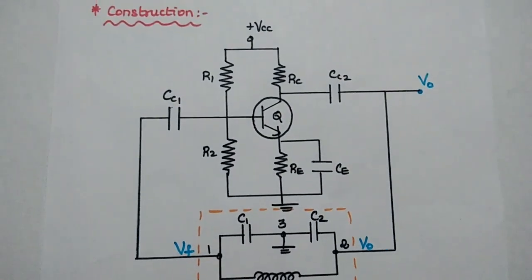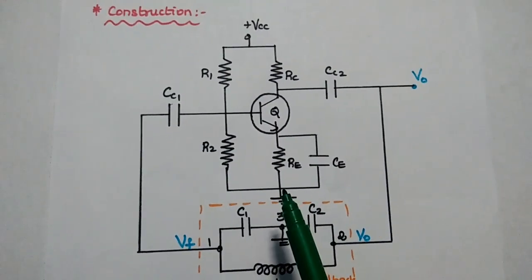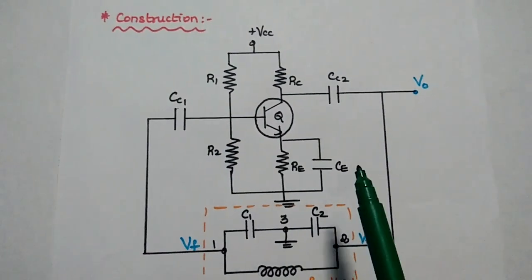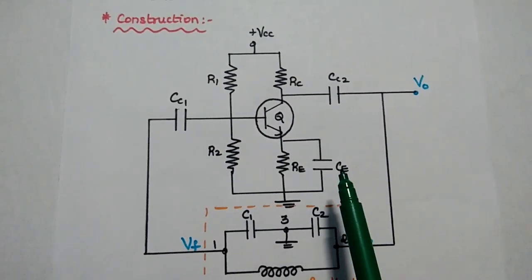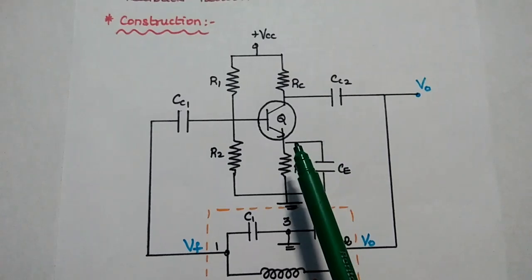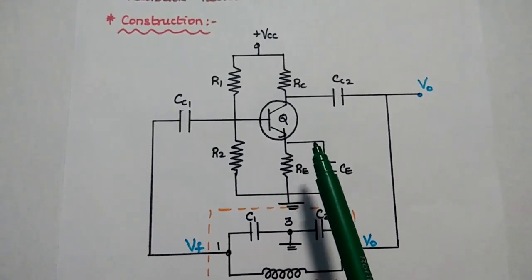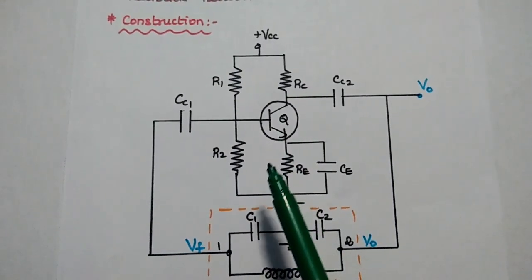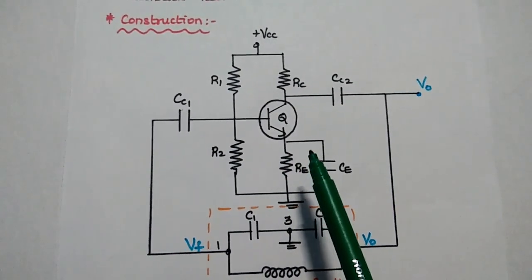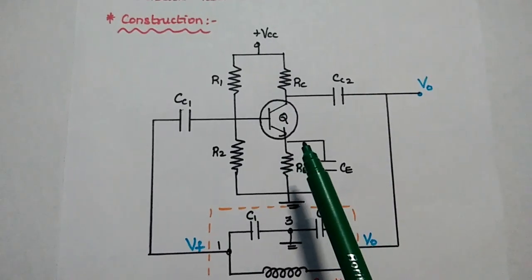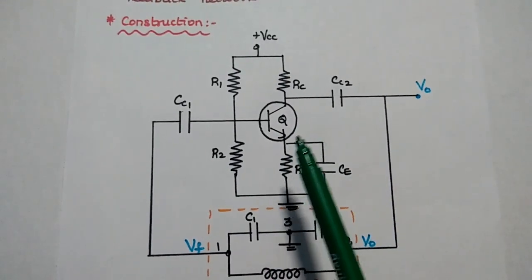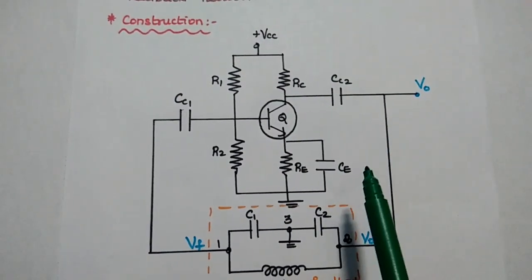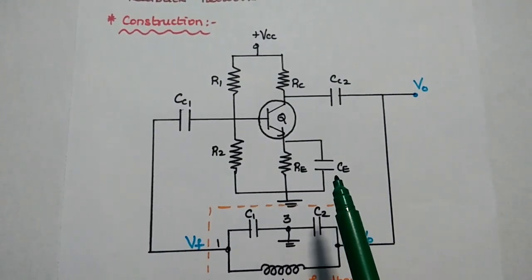This is the construction of the Colpitts oscillator. It consists of an amplifier circuit and a feedback network. The amplifier stage uses an active device — a transistor in CE configuration mode. The resistors R1, R2, and RE are used to provide proper DC bias to the transistor. CC1 and CC2 are the coupling capacitors at the input and output sides, and CE is the bypass capacitor at the emitter side.